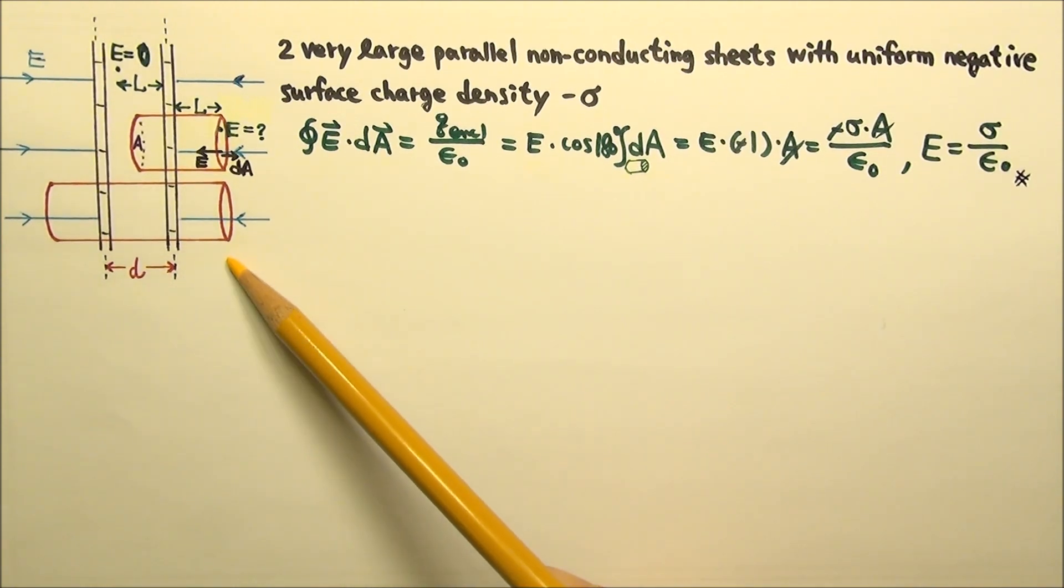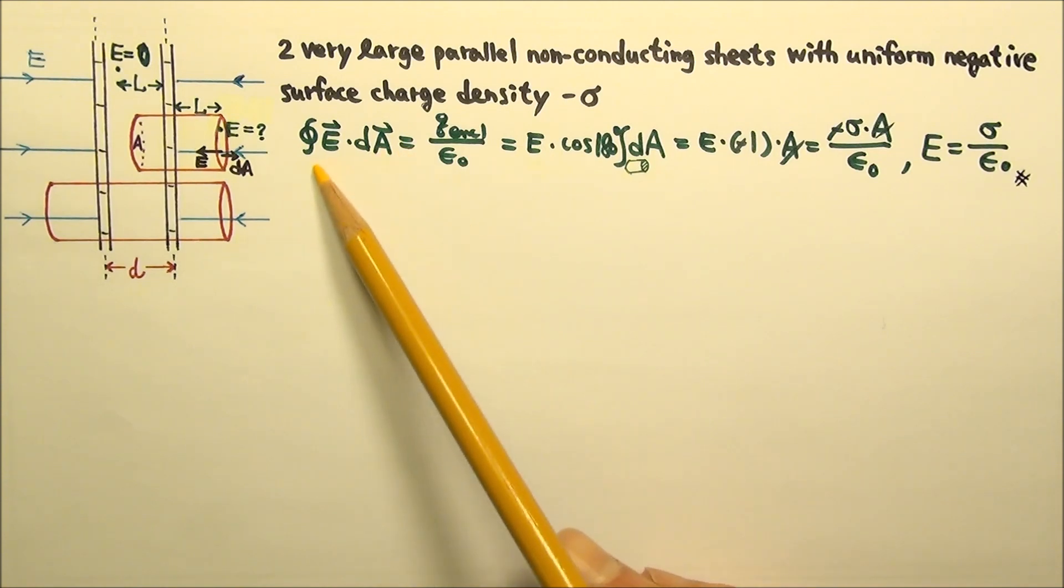And what if we choose this other Gaussian surface? How would our work change?